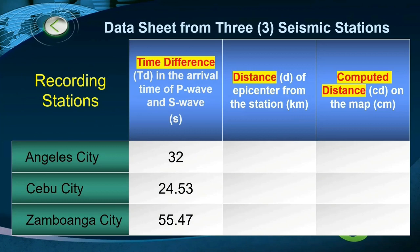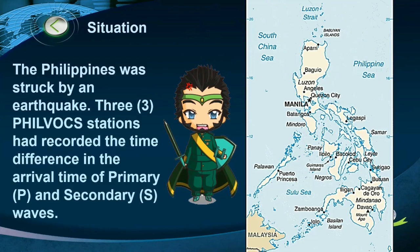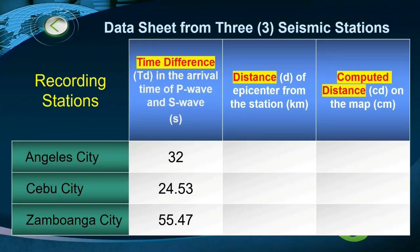The data sheet contains the time difference in the arrival of the P and S waves from three seismic stations. This will be the hypothetical situation for this activity: the Philippines was struck by another earthquake, and three seismic stations recorded the time difference in the arrival of primary and secondary waves. The three seismic stations are from Angeles City, Cebu City, and Zamboanga City.